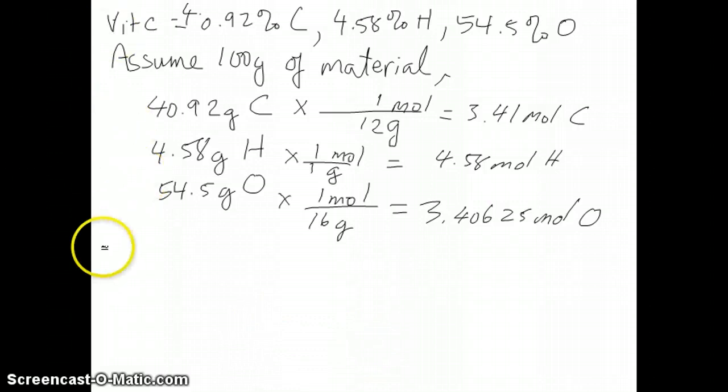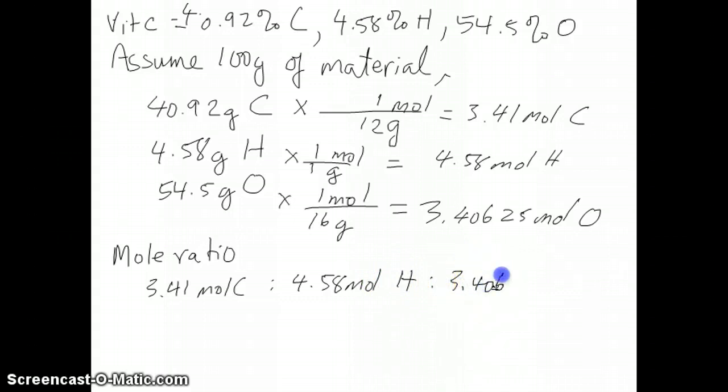If you go back to that slide that shows you the series of steps in order to get to the empirical formula, after you get the number of moles of each of the elements, then what you want to do is get to the mole ratio and reduce this to the smallest whole number ratio possible. Right now, of course, you don't have whole numbers. You have 3.41 moles of carbon, 4.58 moles of hydrogen, and 3.40625 moles of oxygen.